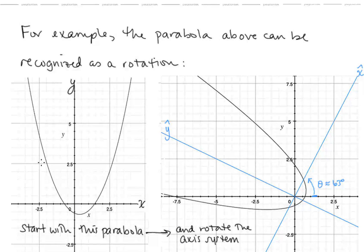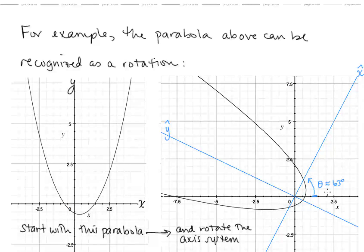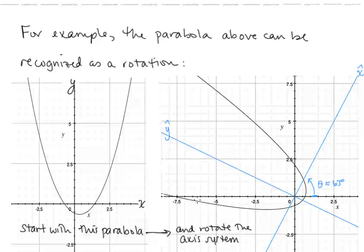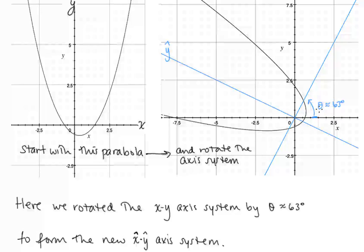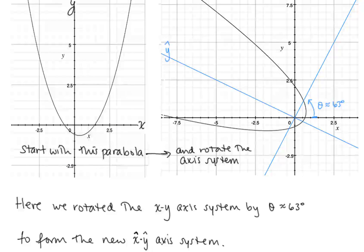For example, the rotated parabola we just saw above can be recognized as a rotation. We start with a parabola in the xy-plane and rotate the axis system by about 63 degrees to get that rotated parabola. I'm going to show this computation in a few minutes — the theta equals 63 degrees. Notice that when we make this rotation, we get a new axis system, and we're calling that the x-hat, y-hat axis system.